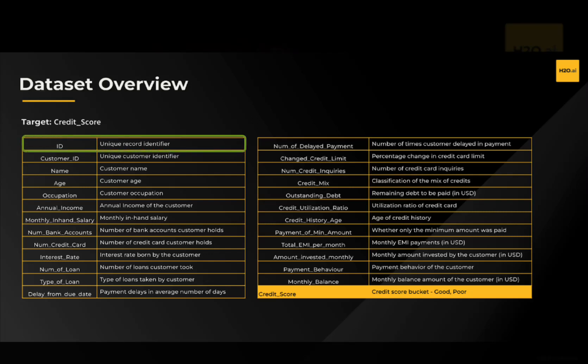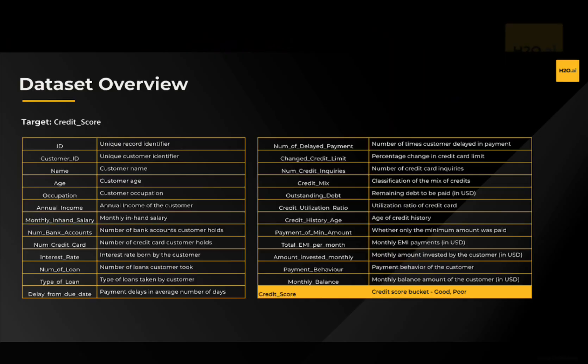As for any structured data set, we have the unique identifier or the ID, which in this case represents an individual application for a loan. Each row is what I like to call the unity of measure, which concerns a specific transaction or, in this case, a specific loan application. We have more information about each application, such as the applicant's ID, name, age, occupation, annual income, monthly salary, bank account information, loan details, or transaction history.